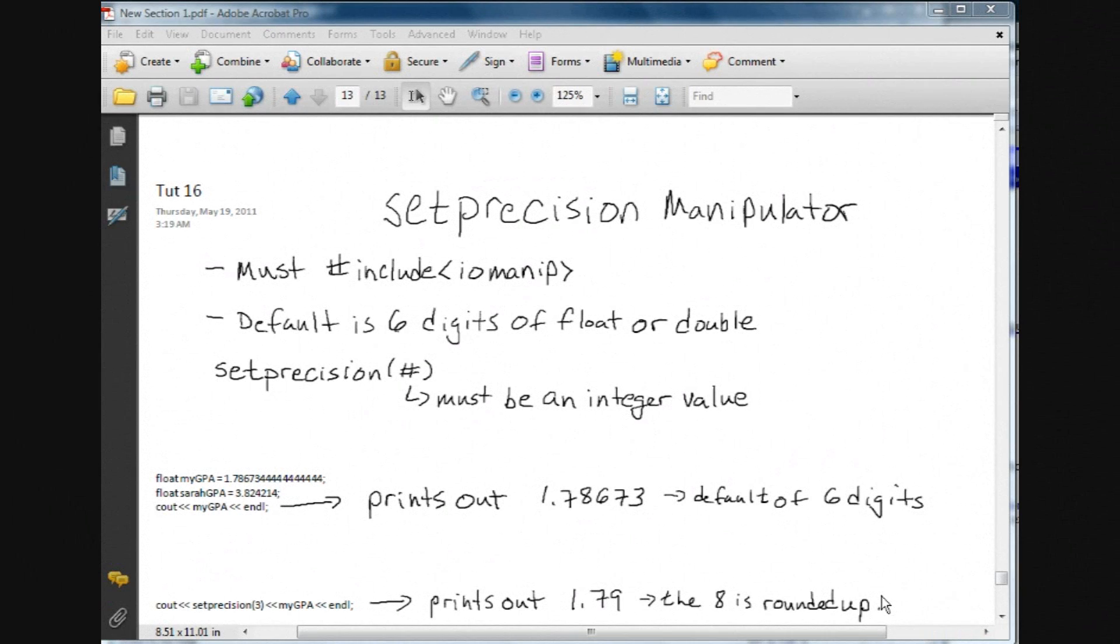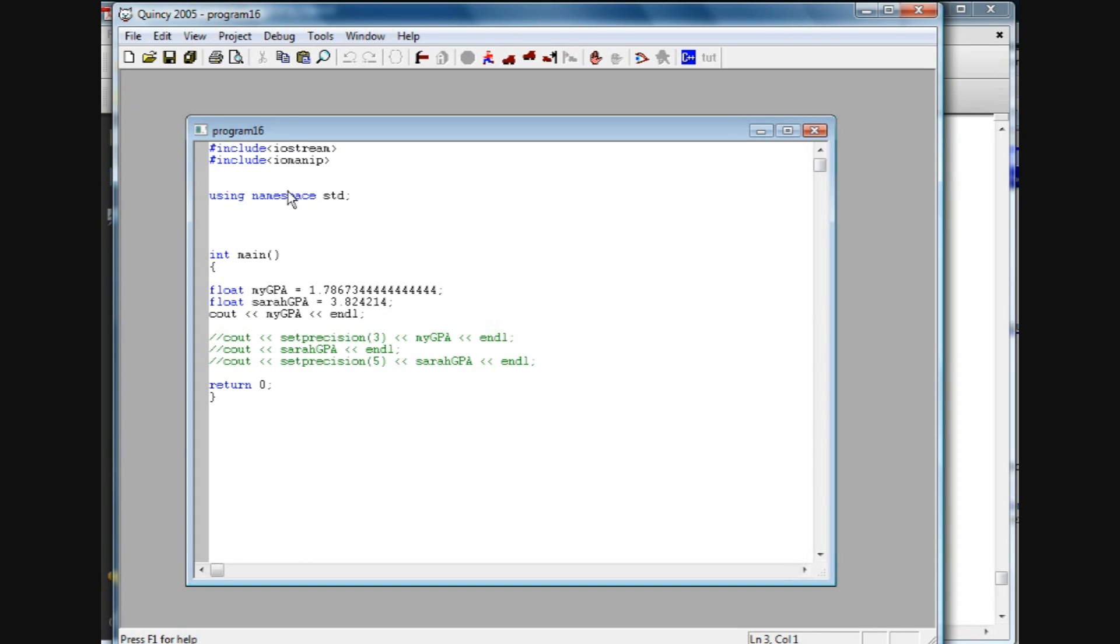Hey, it's Brian from Super Easy Tuts. In this tutorial we're going to cover the setprecision manipulator. It's similar to the setw manipulator that we learned in a previous tutorial. We must pound include the iomanip file. We do that again up here at the top: pound include. That basically gives us access to this iomanip file, and then the using namespace allows us to use the standard declarations inside that file.